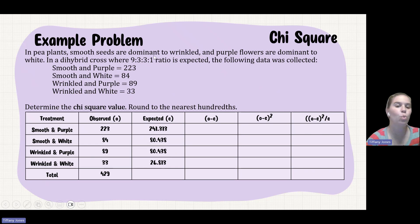And then for my last one is 1 sixteenth. So 429 times 1 sixteenth, which is going to give me 26.813. If you want to confirm that your values are correct, you could add this up and it should give you the same number as your observed.